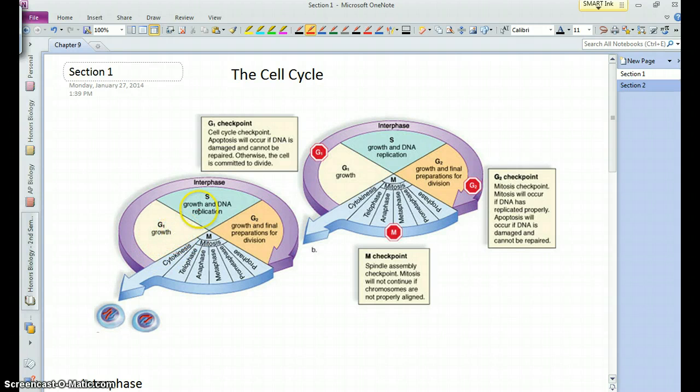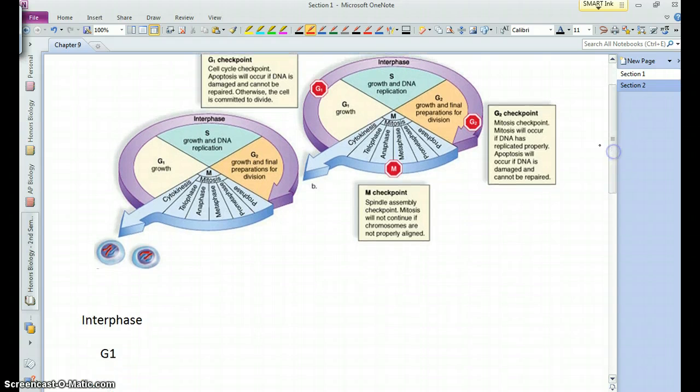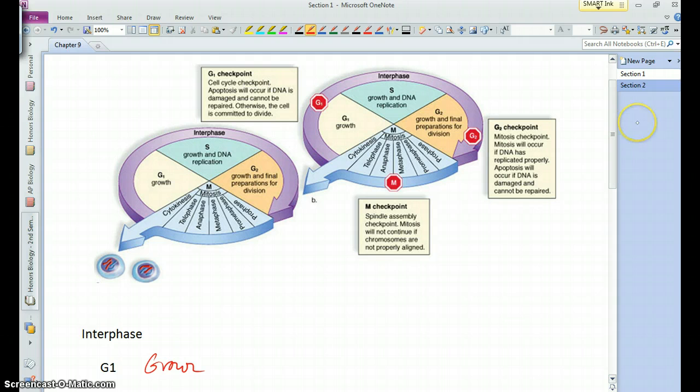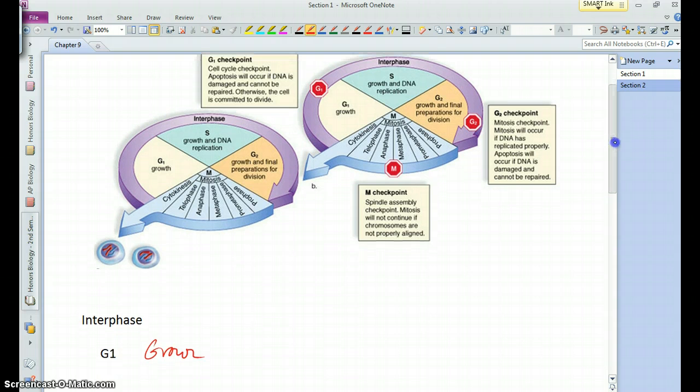The first step of interphase is what's known as the G1. You can think of this as the step in which it grows. It's getting larger in size, it's producing more organelles if necessary. The cell is perhaps doing what it is supposed to do, whatever type of cell it happens to be.